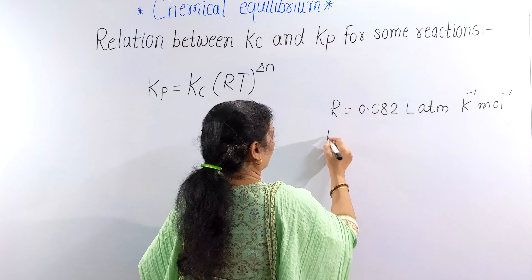So remember, Kp equals Kc for this reaction. This shows that for different reactions, the relation between Kp and Kc is different. It depends upon the type of reaction. You have to remember the value of delta N, and based on that you can determine the relation between Kp and Kc.